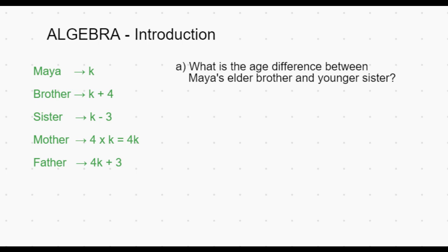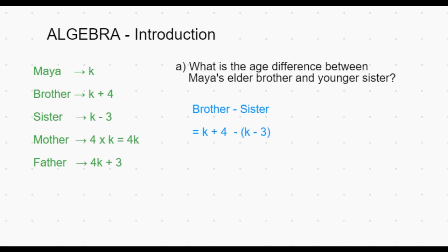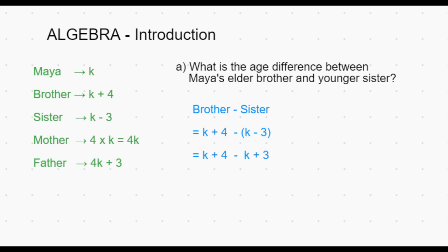What is the age difference between Maya's elder brother and younger sister? The brother we know is K plus 4 and the sister is K minus 3. So we should be subtracting K minus 3 from K plus 4. K plus 4 remains the same.